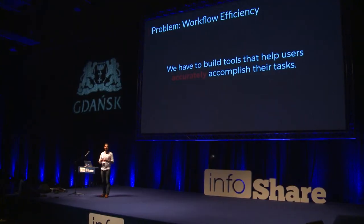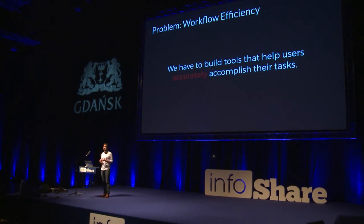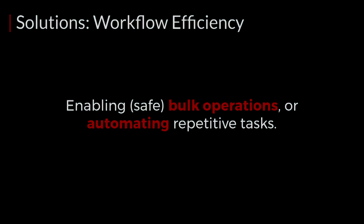We don't want to build something that strictly pushes things through the pipeline and leaves our end users to find all of those mistakes — then they get home, want to watch House of Cards Season 5, and it doesn't work. Other teams look to our catalog as the source of truth, so we have to be accurate as well. Some of the solutions we've explored for workflow efficiency are enabling safe bulk operations and automating some of the repetitive tasks.